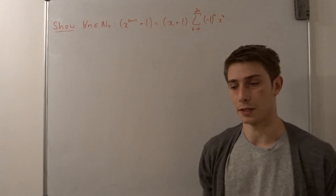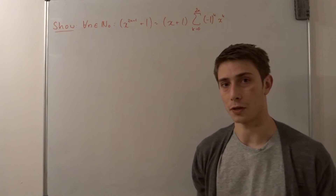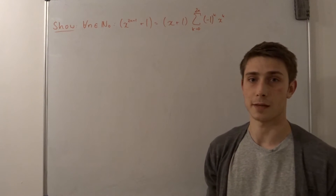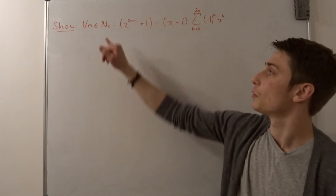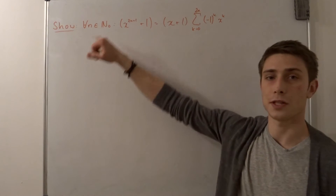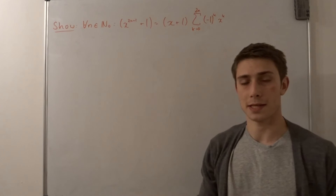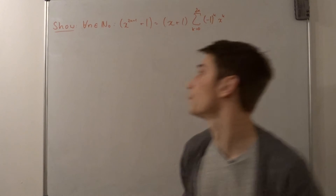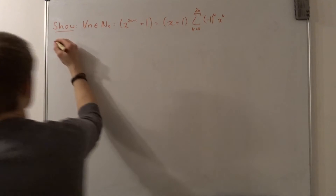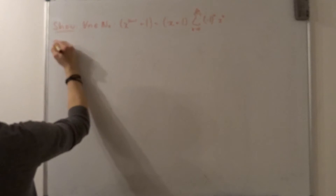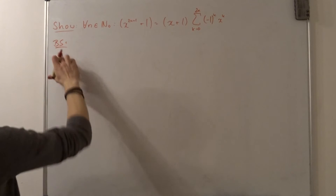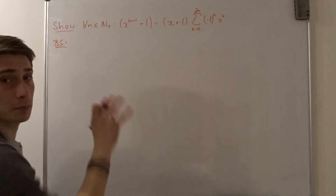So, mathematical induction. What are we going to start with? We are going to start with the base step. We are including 0, so our base step means that we set n equals to 0. So I'm going to say this is the base step.